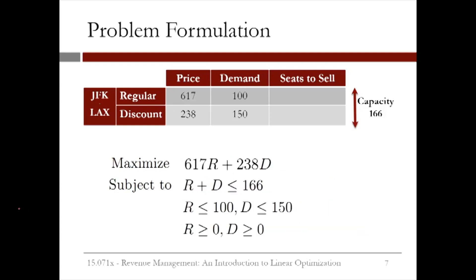Mathematically, this can be written as: maximize 617 times R plus 238 times D — the total revenue — subject to the constraints: R plus D is less than or equal to 166 (the capacity constraint), R less than or equal to 100, and D less than or equal to 150 (the demand constraints), and R and D are both greater than or equal to 0. This is called a linear optimization problem. In the next video, we'll see how to solve this problem using the software LibreOffice.